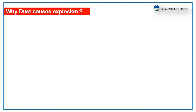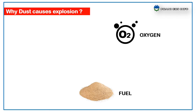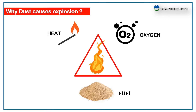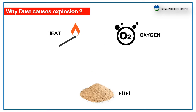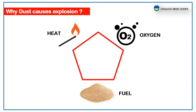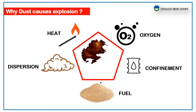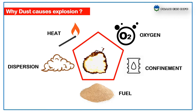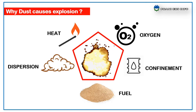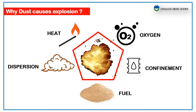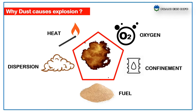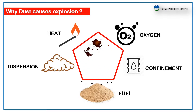Let us see how this dust explosion occurs. We know that the ingredients necessary to start a fire — remember the fire triangle — which represents fuel, oxygen, and heat. When talking about combustible dust, we add two more ingredients: dispersion and confinement. This is what is referred to as the dust explosion pentagon. To have a dust explosion, all five ingredients must be in place.